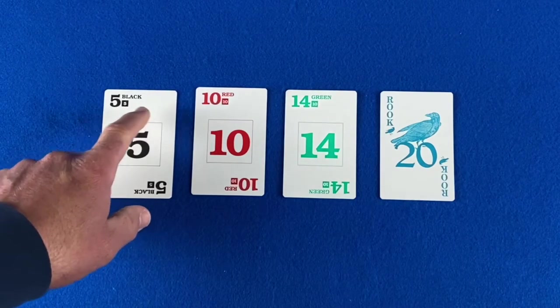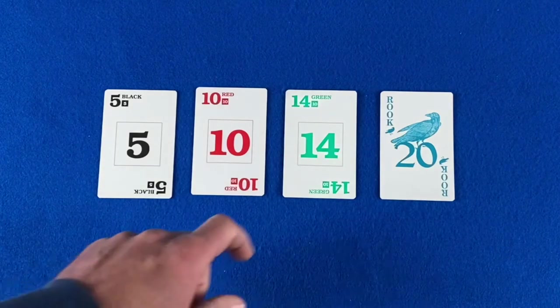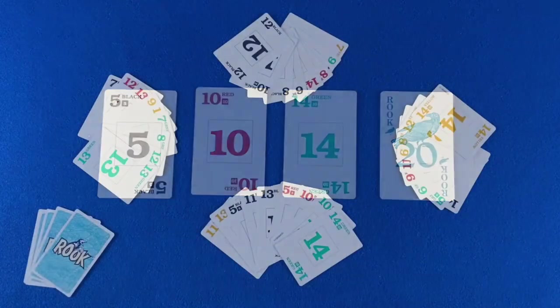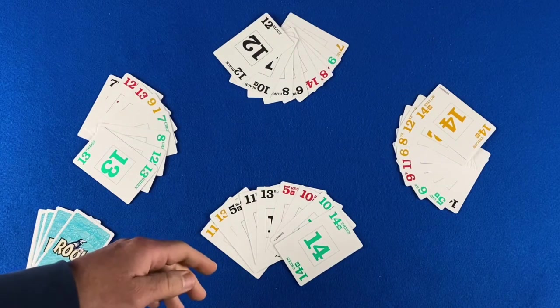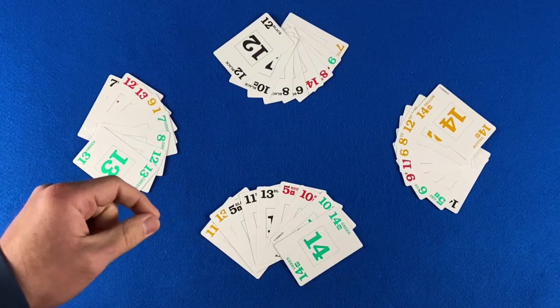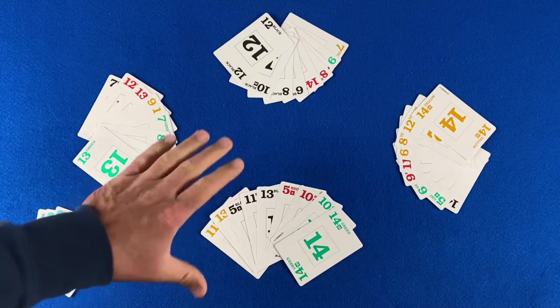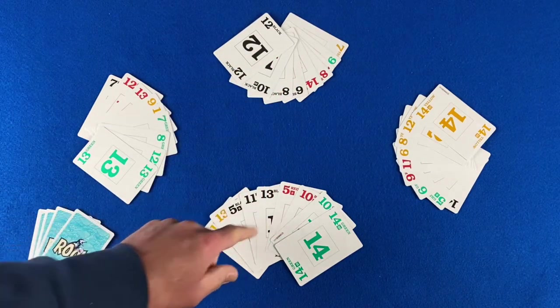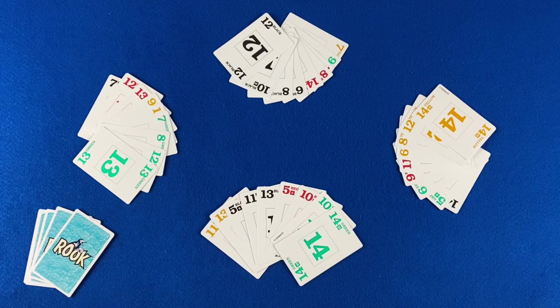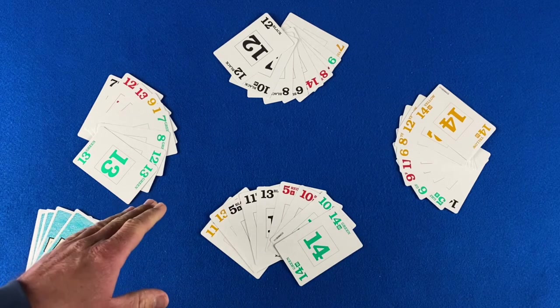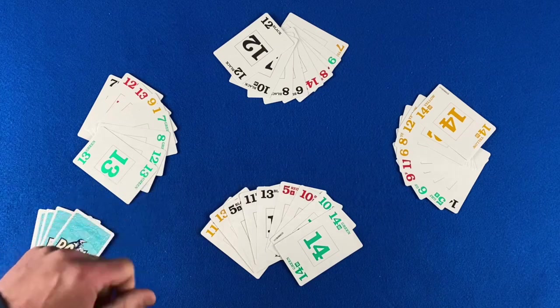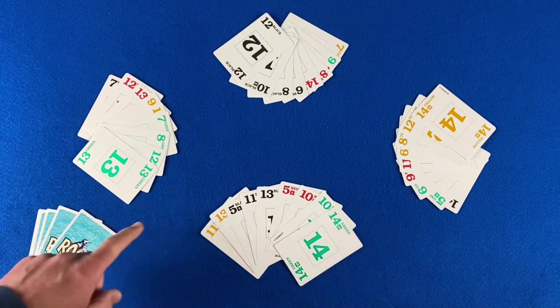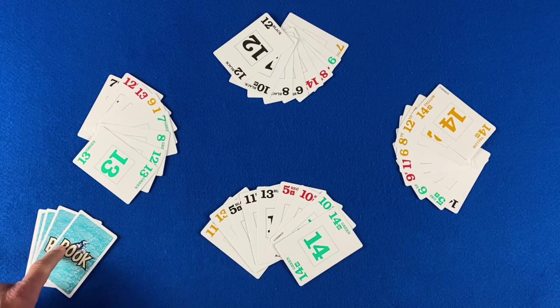So fives are worth 5 points, 10s and 14s are worth 10 points, and the bird card is worth 20 points. During the bidding phase, players bid based on how many points they think their team can capture if they get to determine the trump color for the round. There's a total of 120 points possible during each round. The highest bidder gets to determine the trump color and they get to pick up the nest and exchange cards with it.